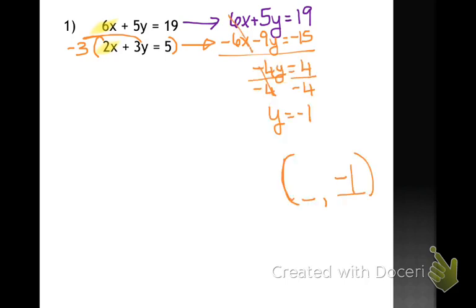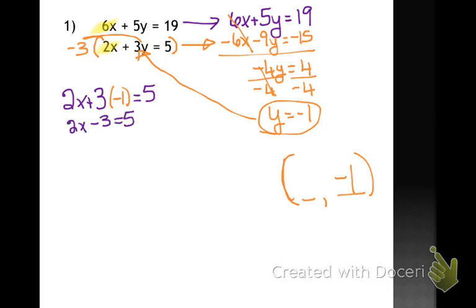Now I'm going to take that negative 1 and plug it back into one of my equations, my original equations. And it doesn't matter which one. So I think I'm just going to put it right there. And that is going to give me 2x minus 3 equals 5. This is a two-step equation you know how to solve. And when I do, I get that x equals 4.